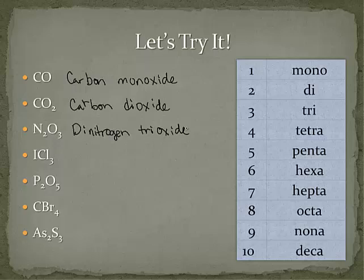Next we have one iodine and three chlorines. That's going to be iodine trichloride — we need that -ide ending, so chloride: iodine trichloride.